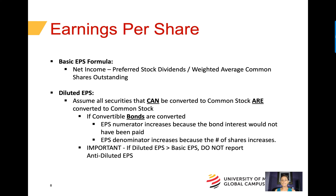Next, let's move on to earnings per share. The formula for basic earnings per share is net income minus preferred stock dividends, divided by the weighted average number of shares of common stock outstanding.